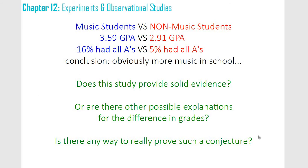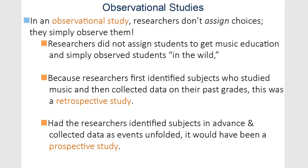So how can we prove that our experiments or observations are valid? What is an observational study? In an observational study, you don't assign choices. You're just watching — looking through a window and recording what you see, in the wild. Retrospective is collecting data on old stuff, your old grades, things that have already happened.